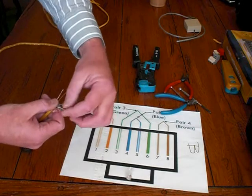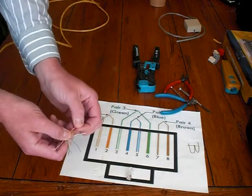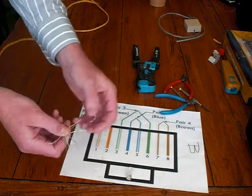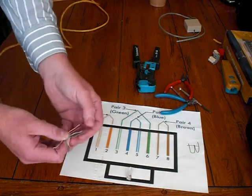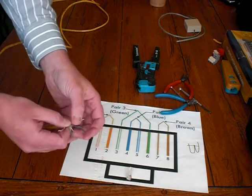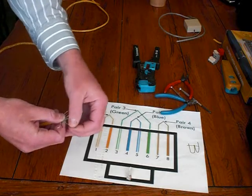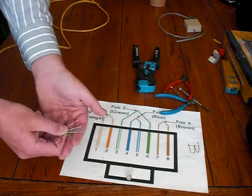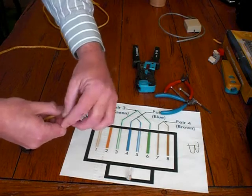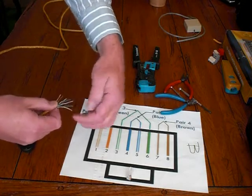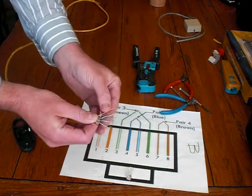See? That's why I have the pin out because it stretches. So we're going to do orange stripe, orange solid, green stripe. And then we're going to come down to the blue, blue pair or blue stripe. And then we're going to go down to the green solid. And then we're going to go down to the brown with stripe and brown. So you basically have that lined up.